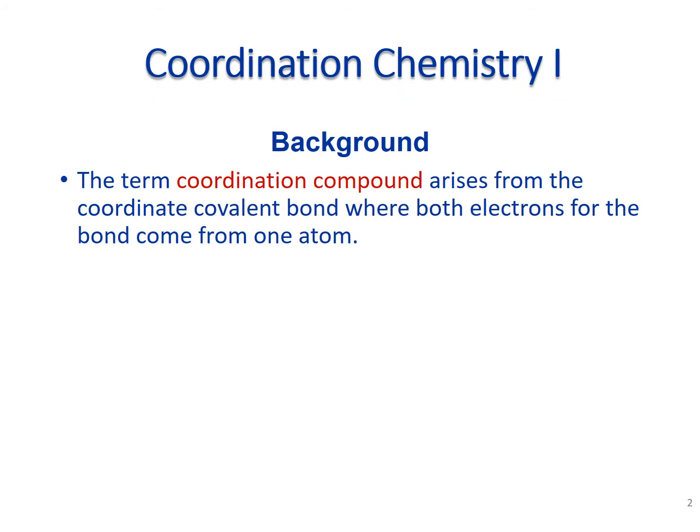The term coordination compound comes from a coordinate covalent bond, where both electrons in the bond come from one atom. This is slightly different from a traditional covalent bond where you get one electron from both atoms that are contributing and sharing those electrons. Here we're getting them from just one of the atoms.